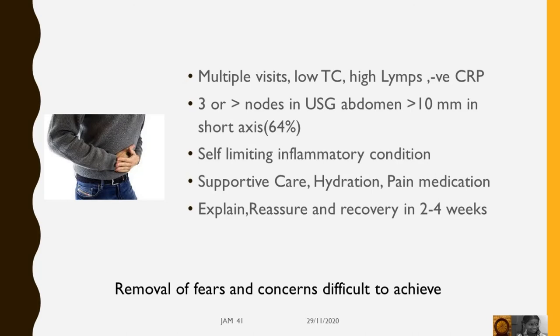Laboratory parameters include low total count, high lymphocytes, and negative CRP. On ultrasound abdomen, three or more nodes with more than 10 mm in short axis are diagnostic criteria.